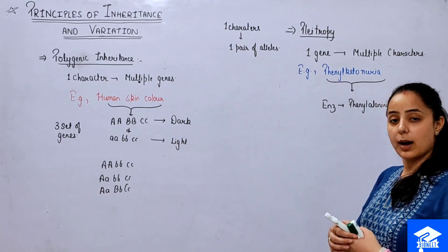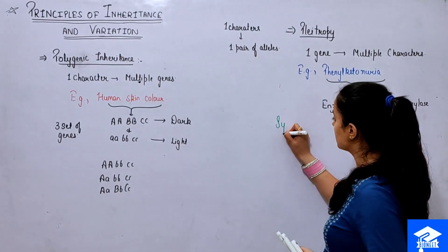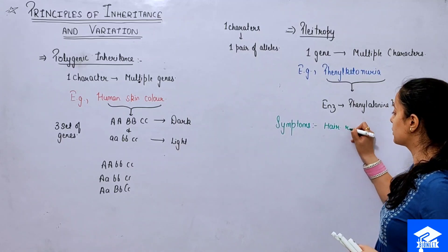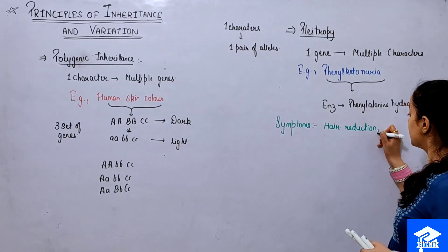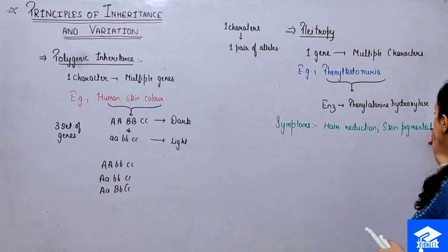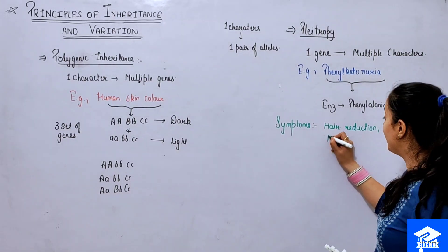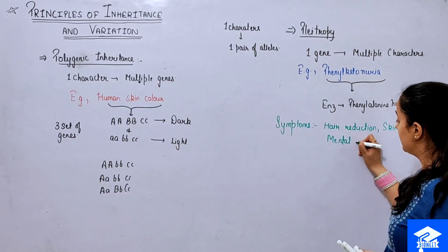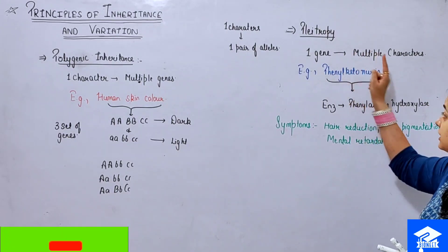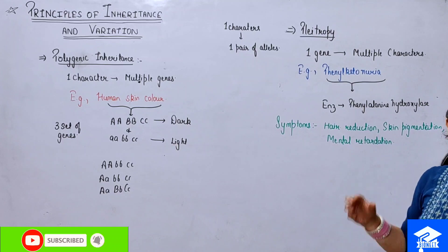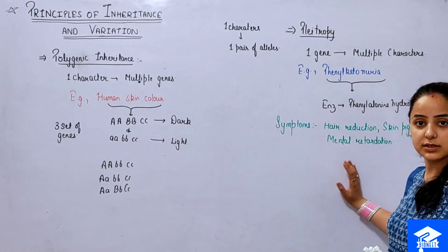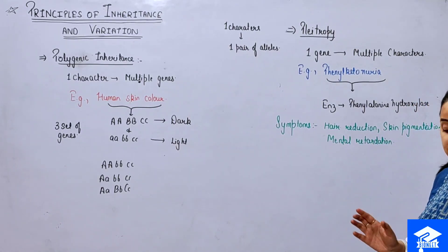Because phenylalanine is not converted, multiple symptoms appear. The symptoms of phenylketonuria include hair loss or reduced hair pigmentation, skin pigmentation changes in affected areas, and mental retardation. These are different characters all affected by one single gene malfunction — this demonstrates pleiotropy.